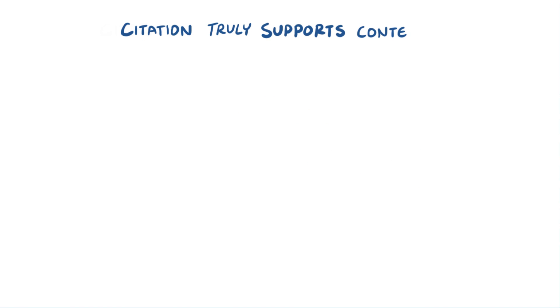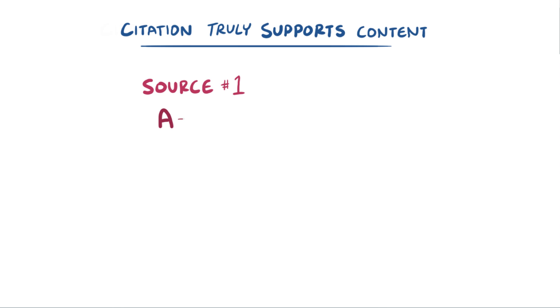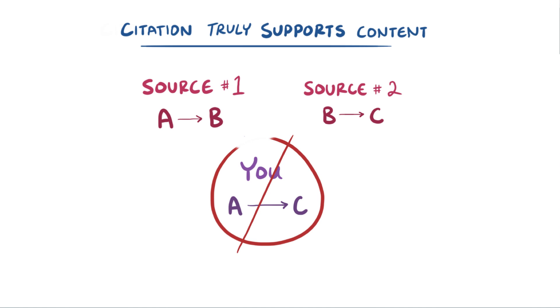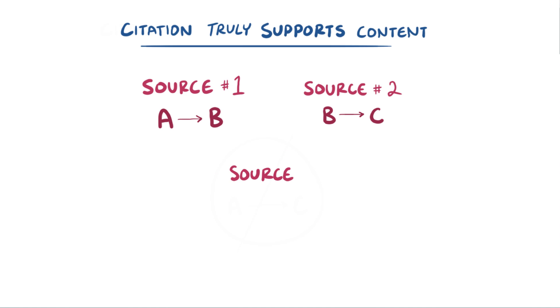Additionally, every citation you use should truly support the content you're trying to convey. If you have one source that says A leads to B, and another source that says B leads to C, you shouldn't generally write that A leads to C. That's considered original research, and is prohibited on Wikipedia. Instead, find a source that specifically connects A and C, or describe the two connections in separate sentences.